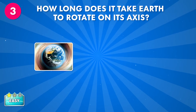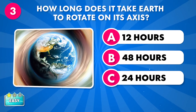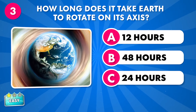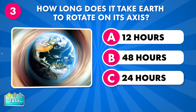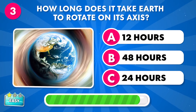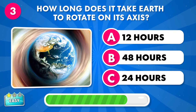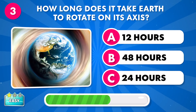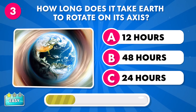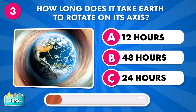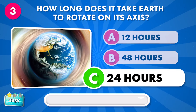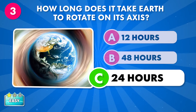How long does it take Earth to rotate on its axis? A: 12 hours, B: 48 hours, C: 24 hours. It's 24 hours.